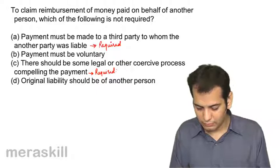A contingent contract dependent upon the non-happening of a future uncertain event becomes enforceable when such event: A) happens, B) does not happen, C) becomes impossible, D) none of these. It becomes enforceable when the event becomes impossible. The answer is C.